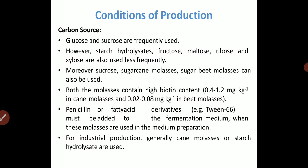Regarding conditions of production — the carbon source: glucose and sucrose are frequently used. However, starch hydrolysate, fructose, maltose, ribose, and xylose are also used less frequently. Moreover, sucrose, sugarcane molasses, and sugar beet molasses can also be used — any molasses containing high biotin content. Penicillin or fatty acid derivatives must be added to the fermentation medium when these molasses are used. For industrial production, generally cane molasses or starch hydrolysate are used.